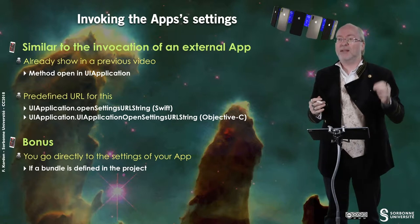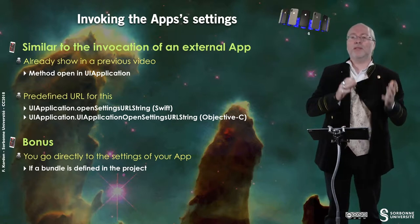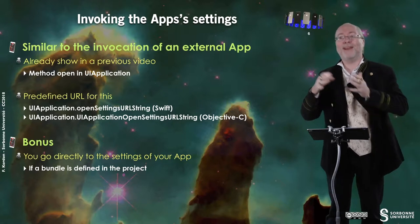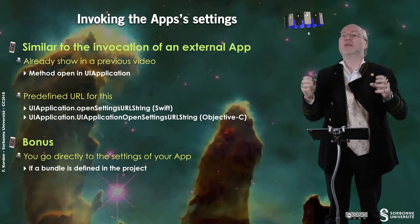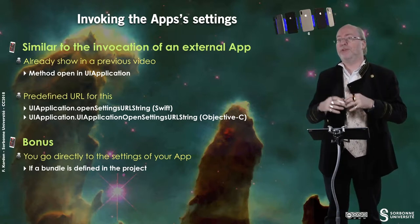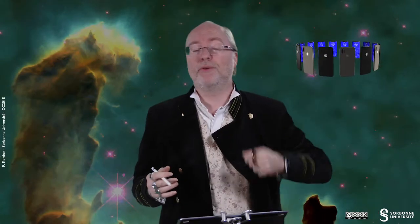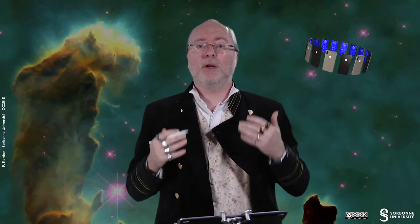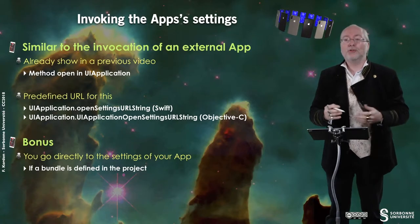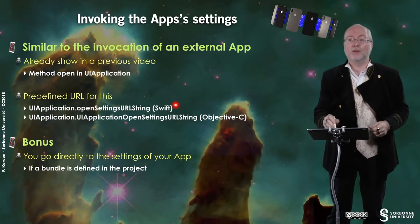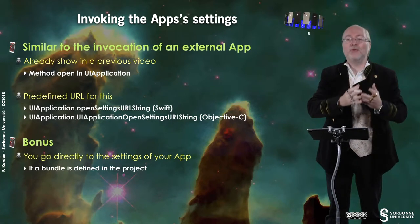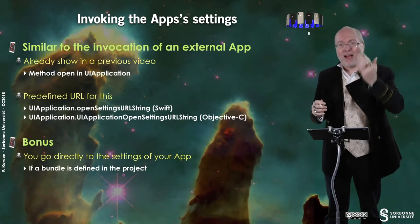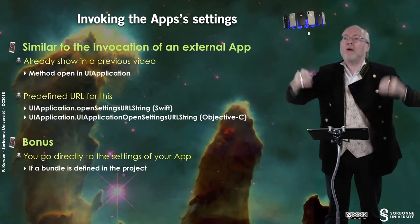We already dealt with that in a previous video, when we were managing the fact that a given application could open any other application. There was a list of URLs corresponding to parts of the settings application — for example, network settings, sound, privacy, etc. But there is a way, using a default URL that is in fact a constant, to open the settings application directly at the page corresponding to your application's settings.